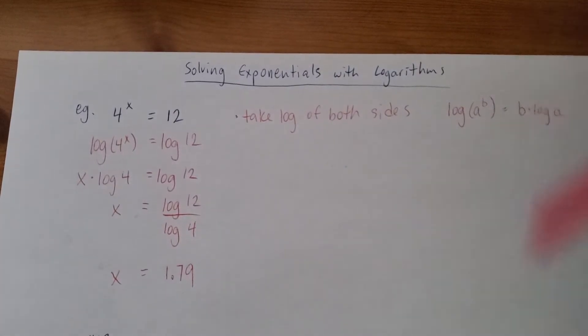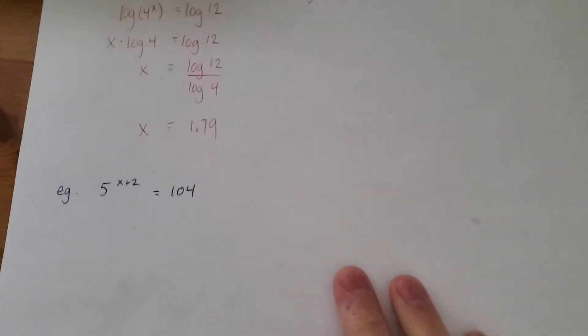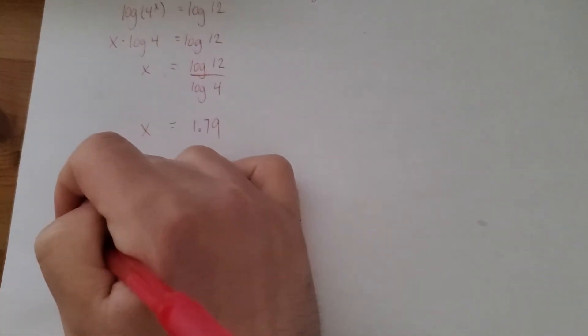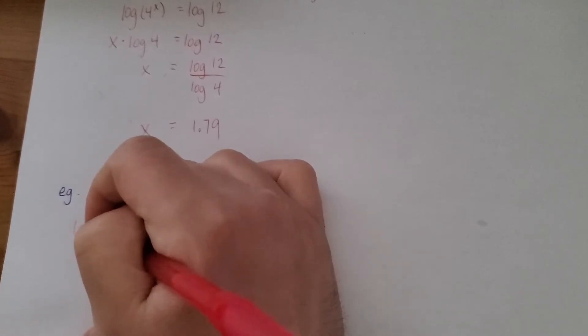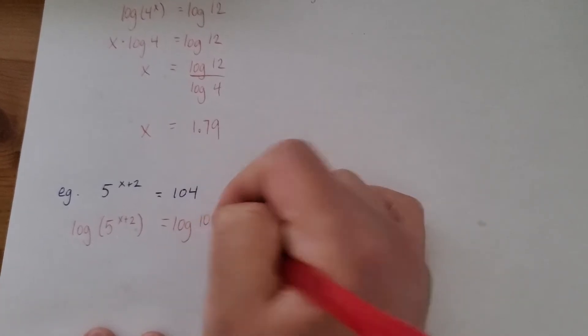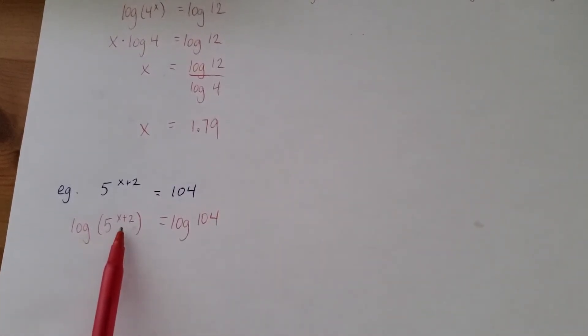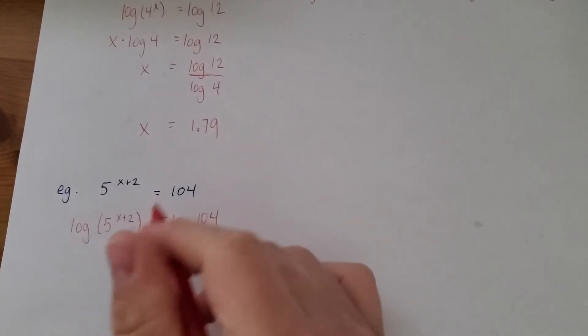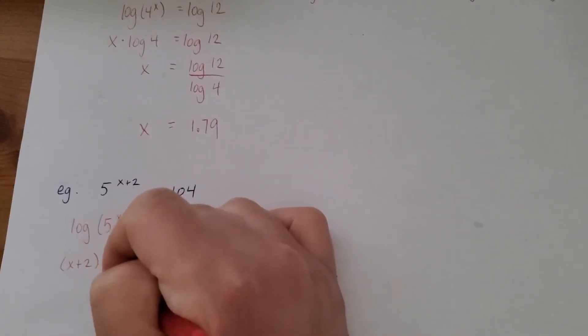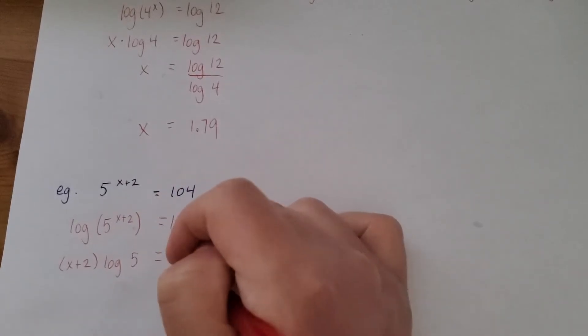Got another one ready to go. Take the log of both sides. Just like before, we have an exponent. It goes in front of the log. This exponent is a little more complicated, but the rules are the same. It just goes in front of the log.